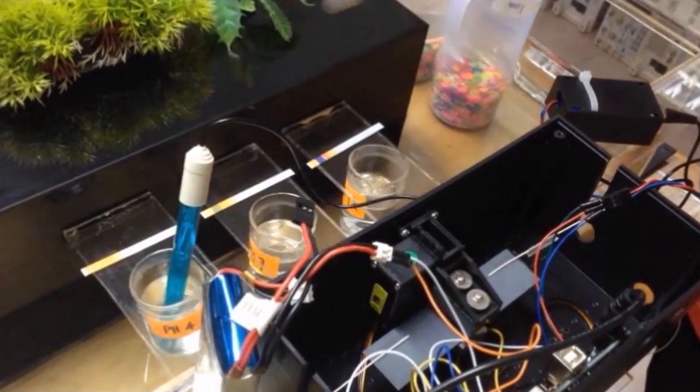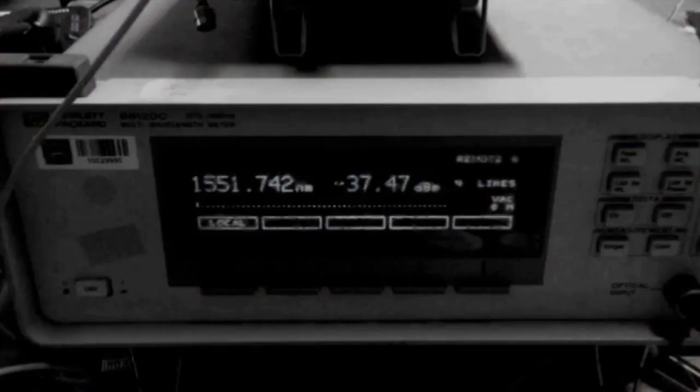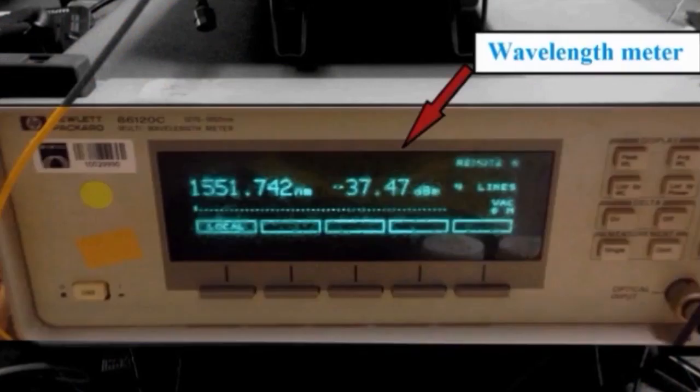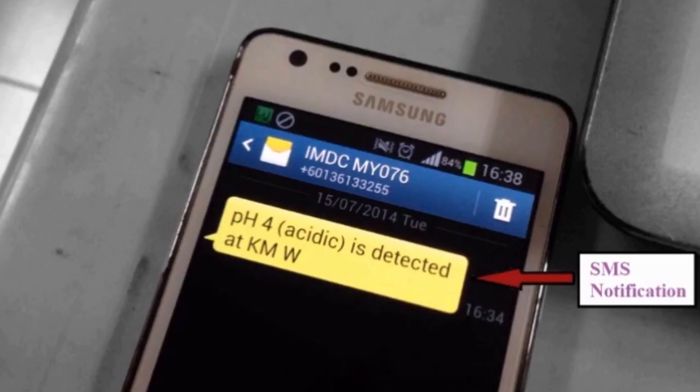The pH sensor is dipped in an acidic solution of pH 4. Then the gripper will start to respond and change the wavelength of the FBG. The wavelength meter will measure the wavelength value. The graphical user interface of the pH sensor will now show that the system has detected an acidic solution and sends an SMS to the person in charge.